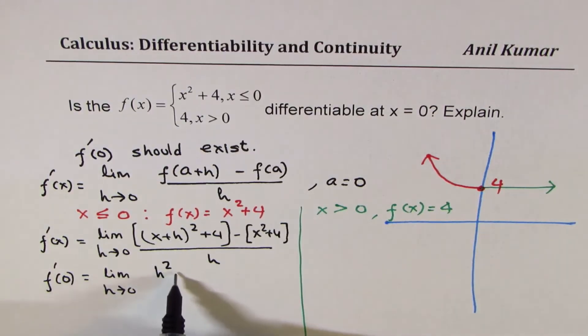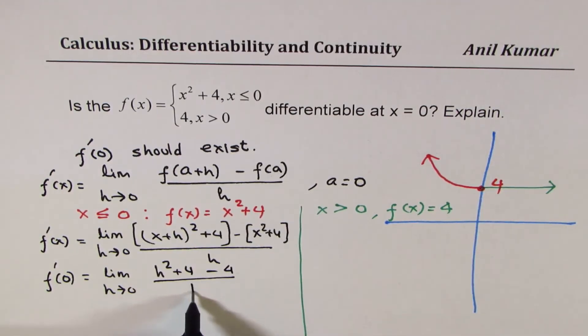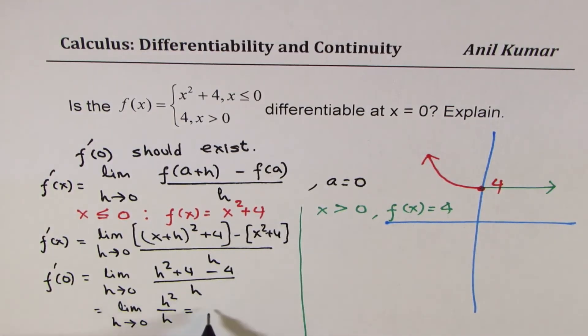I get h² + 4. x is equal to 0, right? And on the right side, what I get is x is 0, I get -4 over h. Is that clear? So that gives you limit h approaches 0 of h² / h...